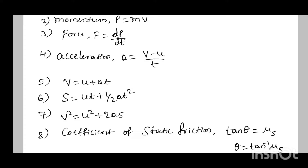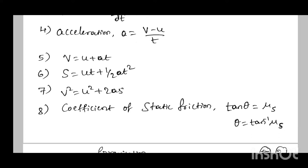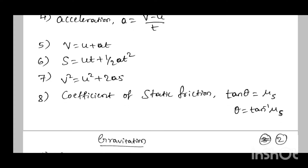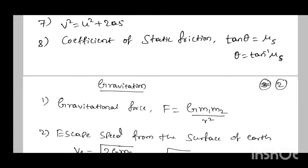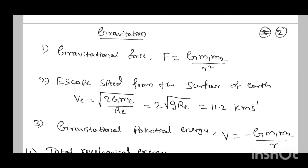These kinematic equations from motion in a straight line are also used here for finding quantities related to particle motion. Next is coefficient of static friction: tan theta equal to mu s, where mu s is the static friction coefficient. So theta equal to tan inverse of mu s.